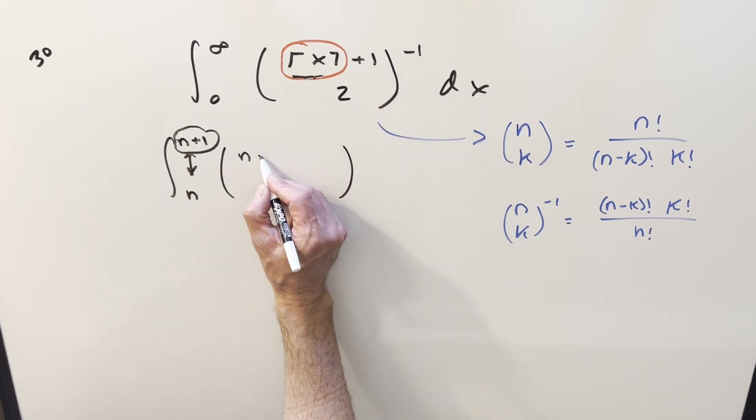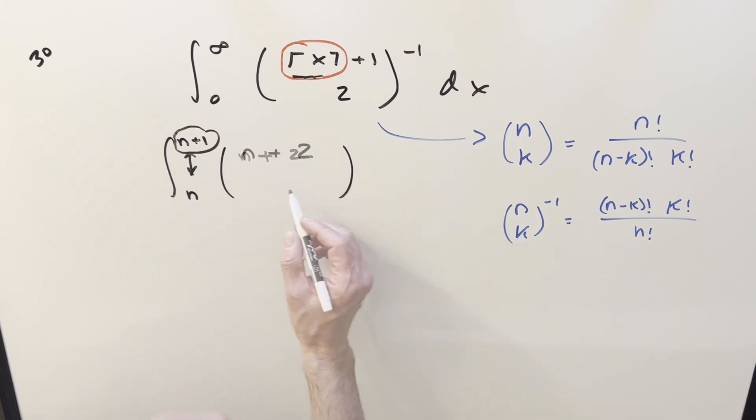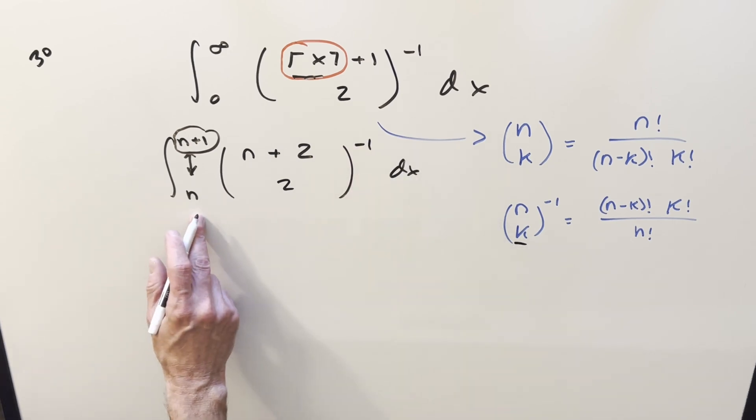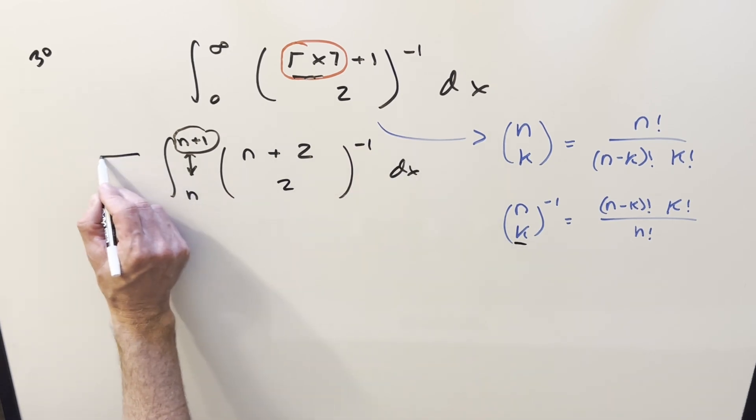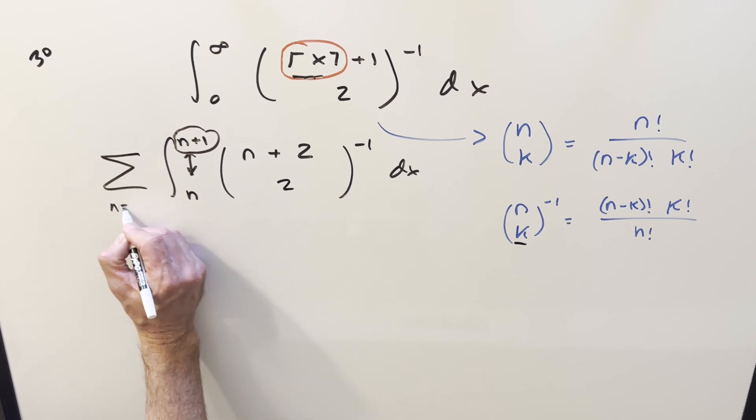But we're adding one, so it's actually going to become n plus two. And then we still have two for this k value here. We'll flip it in a minute. But we're going to have an infinite number of these integrals, so we're going to sum all these, starting with the first one is going to be zero, going all the way to infinity.